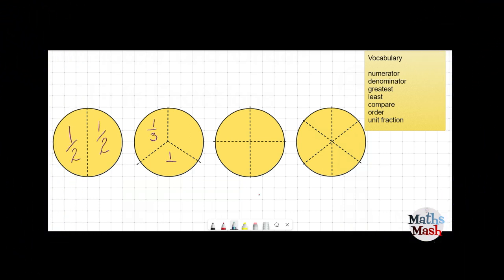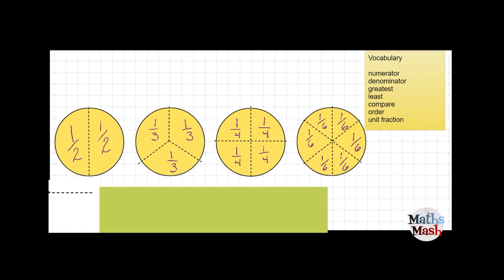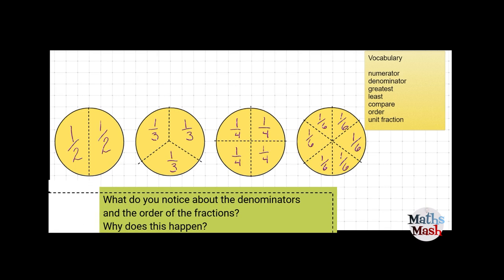Okay so in my first pizza here I've got one-half, I've got one-third, one-quarter, one-sixth. These are unit fractions because they all have a one as the numerator.